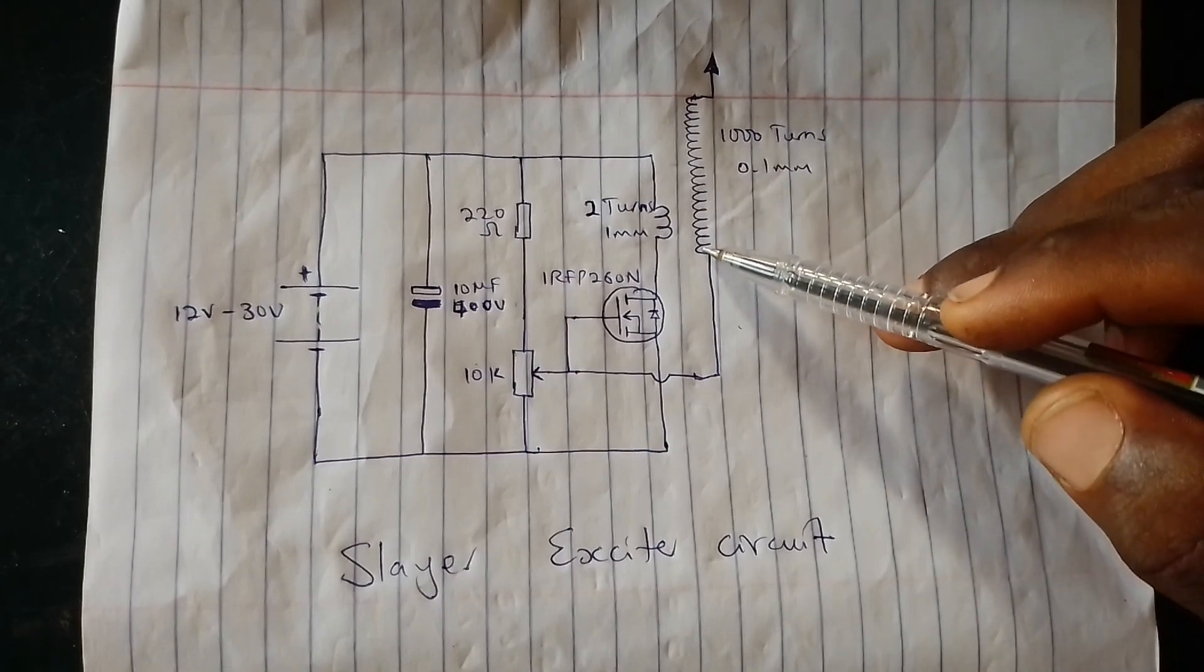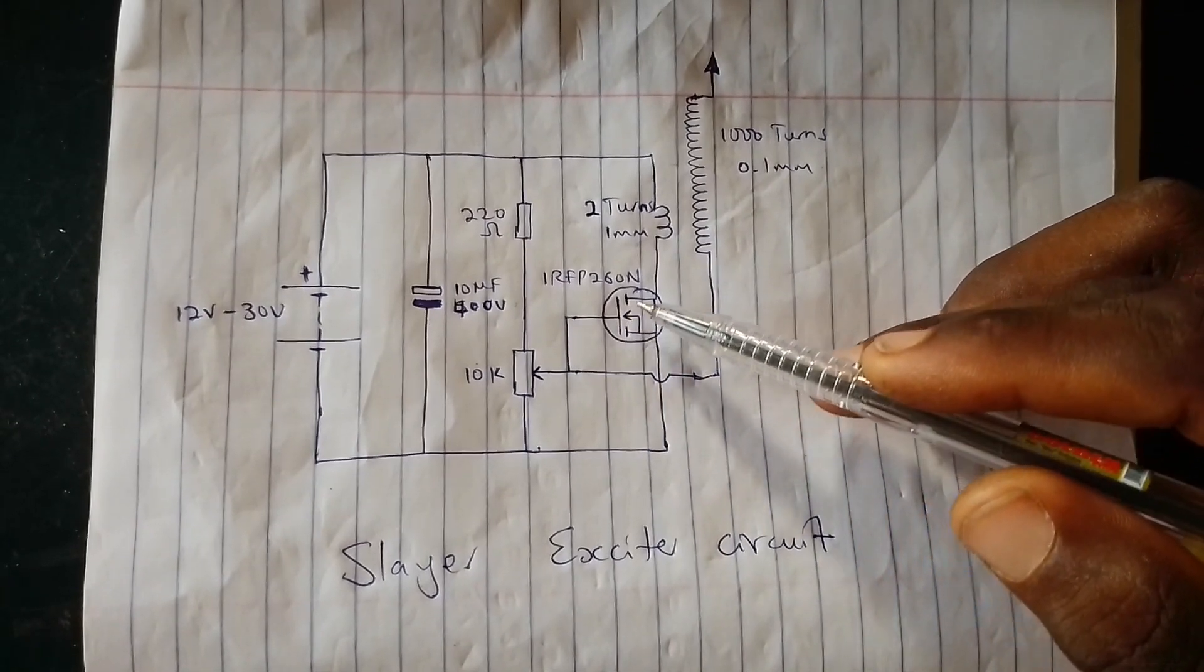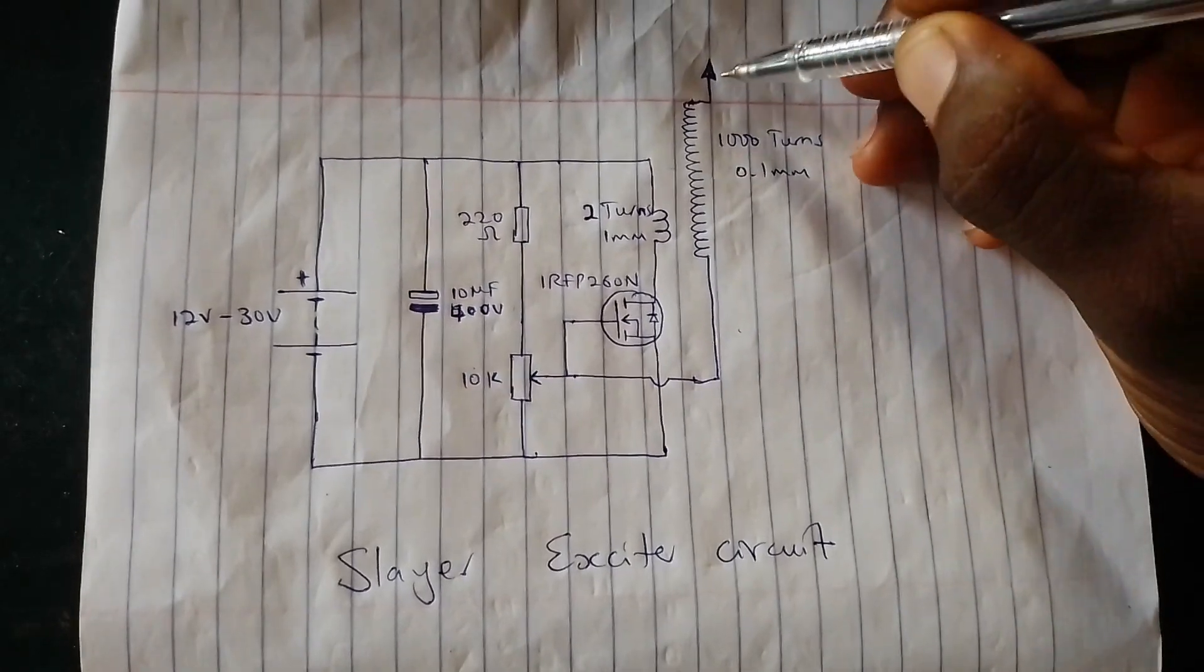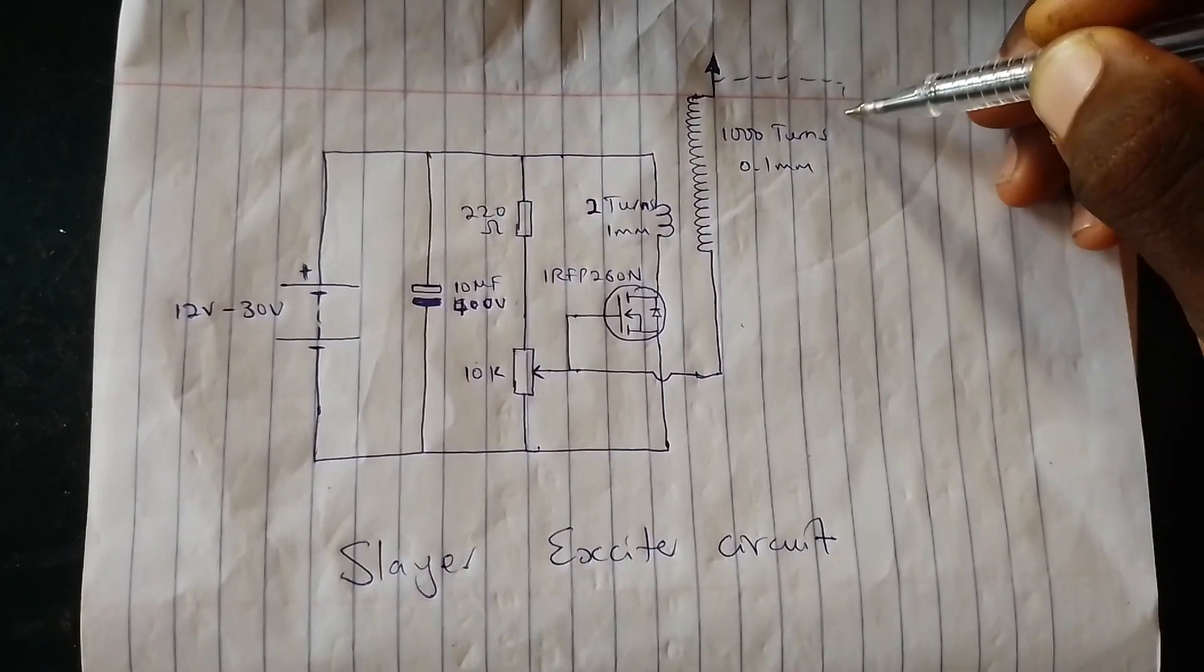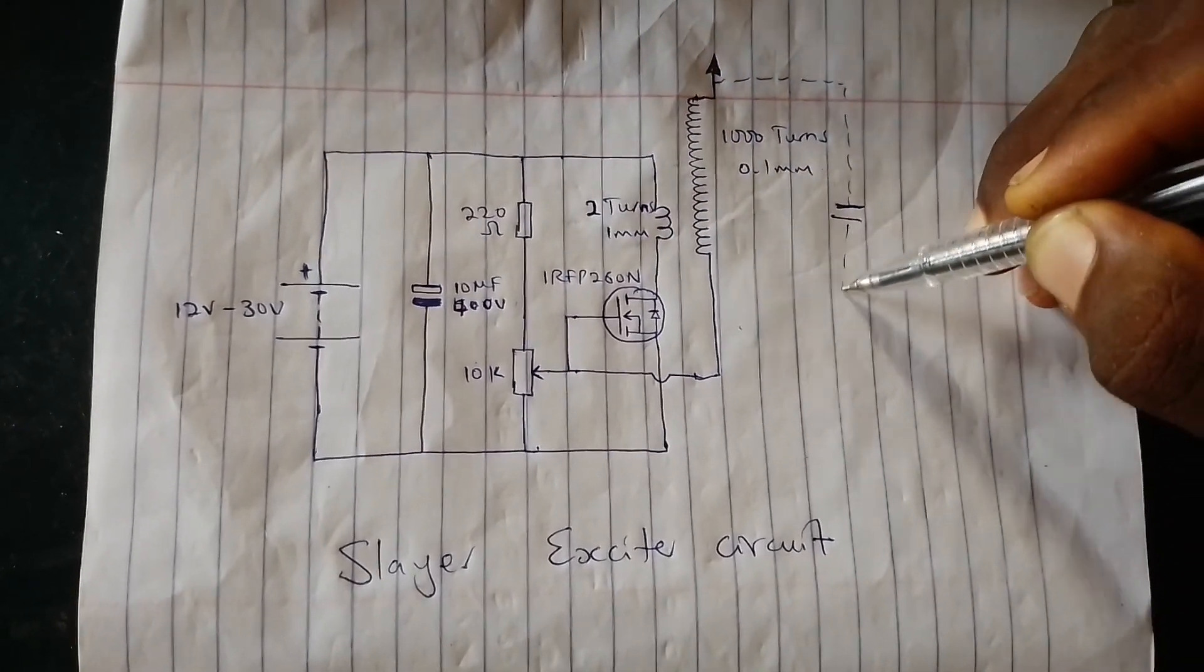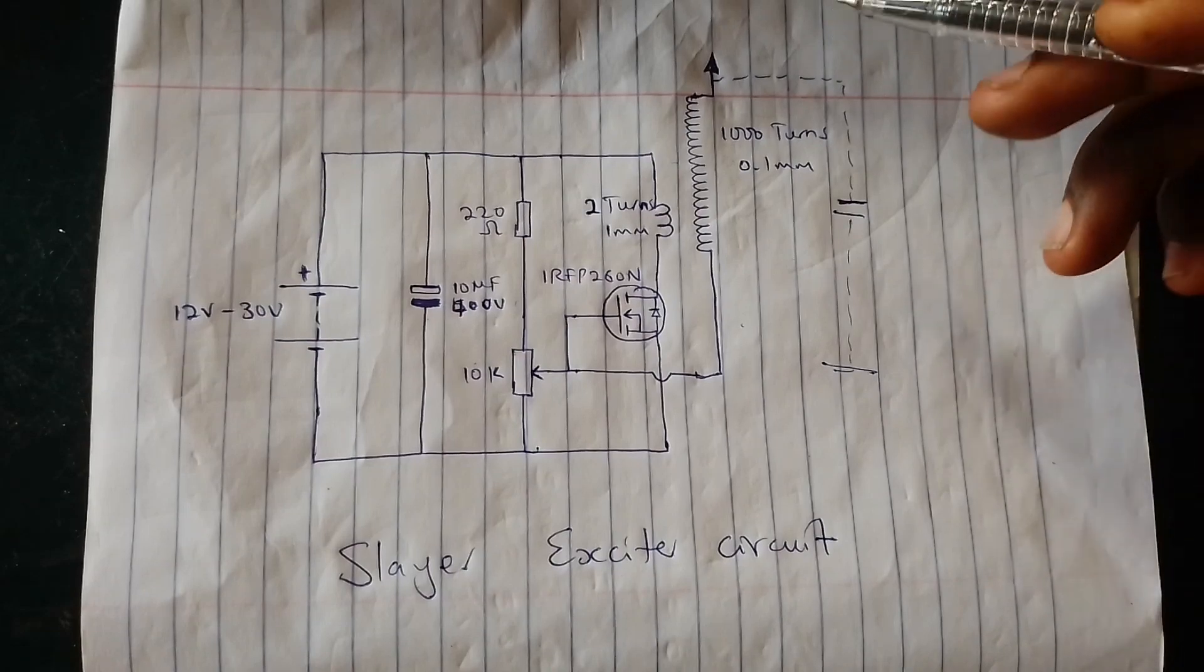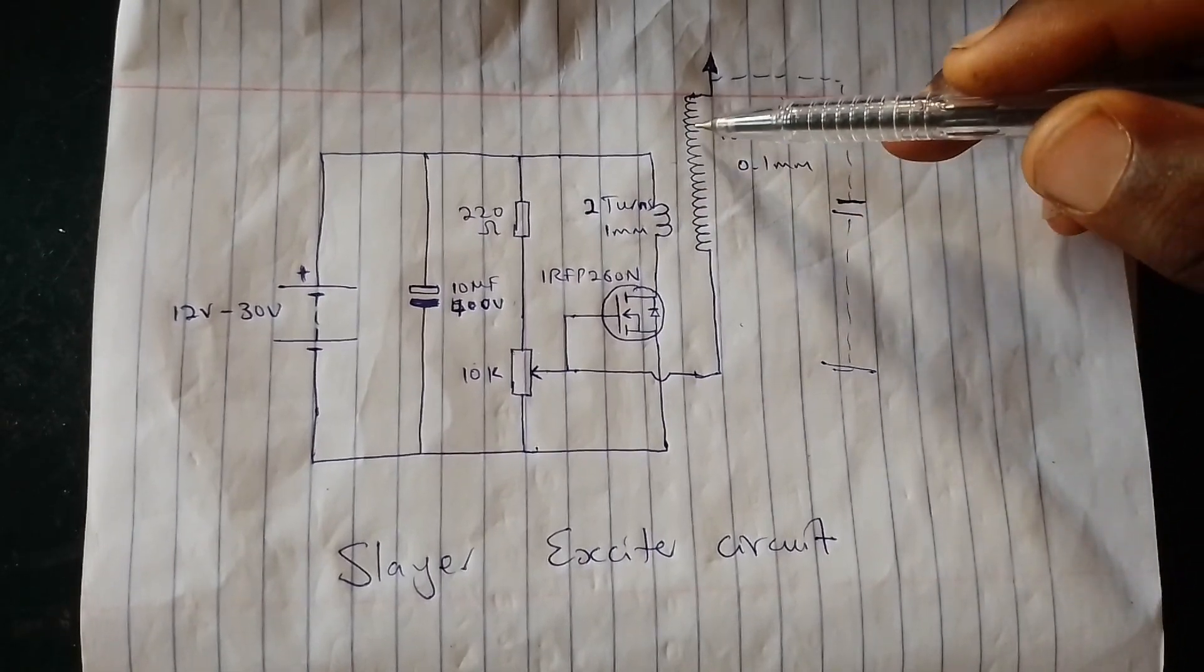And as you can see here, the secondary coil has a feedback that is going back to the gate of the MOSFET. This causes the circuit to continue oscillating at the resonant frequency of the secondary coil. Now take note that there is a stray capacitance coming from this extended output of the secondary coil down to the ground, which makes it an LC resonant circuit. So this causes the circuit to automatically tune itself to the resonant frequency of the secondary coil.